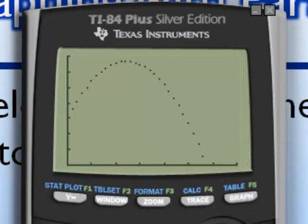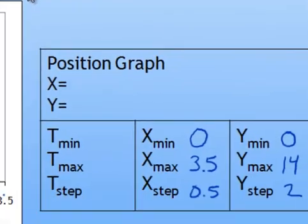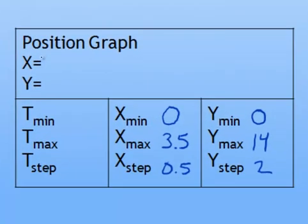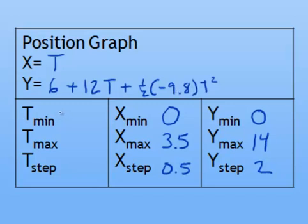Let me just finish now writing down what we typed on the calculator to create the graph. For the X equals equation, we had used X = T. And for the Y equals equation, we used 6 + 12*T + 1/2 * -9.8*T^2. And for our time values, we settled eventually on 0 to 3 by tenths of a second.